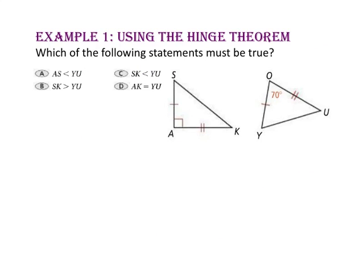In example one, we will use the hinge theorem. Which of the following statements must be true? We know that side SA is congruent to side OY, and side AK is congruent to side OU. Since the measure of angle A is 90 degrees but the measure of angle O is 70 degrees, the side opposite angle A, SK, must be greater than the side opposite angle O, side YU. So the correct answer would be B.